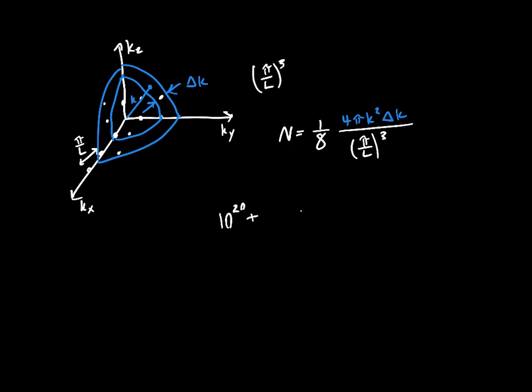So if we just factor out the pi over l or expand it, it's just one over eighth four pi k-squared delta k divided by pi-cubed times l-cubed. And remember, we said we wanted the total number of states per volume, right? We wanted the total number of states per volume in our semiconductor, the density of states, and so we just divide by l-cubed, the total volume of our semiconductor, and we just cancel it.